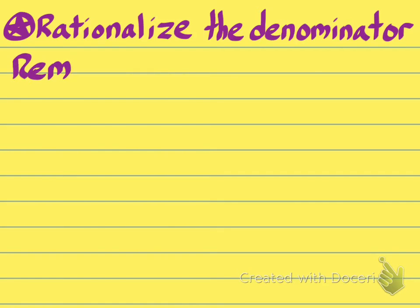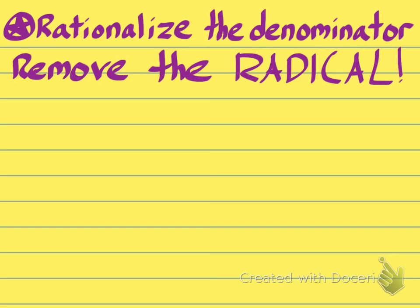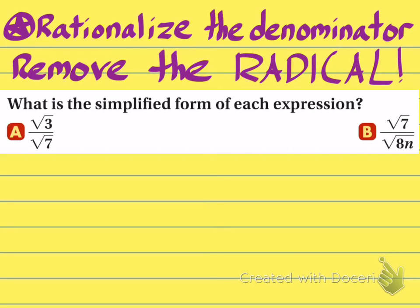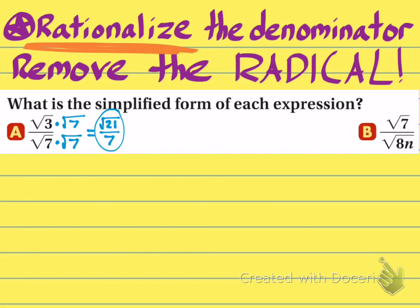Here's the part where we rationalize the denominator. Basically, you need to remove the radical sign from being in the denominator — it's okay if it's in the numerator, but it can't be in the denominator. In part A, it's okay to have radical 3 in the numerator, but not radical 7 in the denominator. Just like making common denominators with fractions, multiply the numerator and denominator by the square root of 7. The square root of 3 times the square root of 7 gives you the square root of 21. In the denominator, the square root of 7 times itself is 7. That's the final answer — the goal is to have a whole number in the denominator.